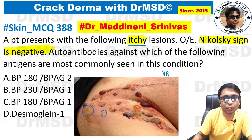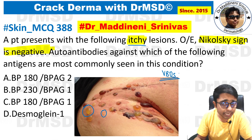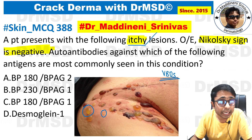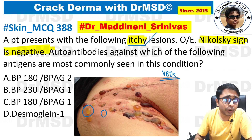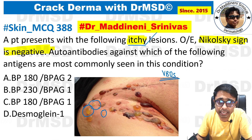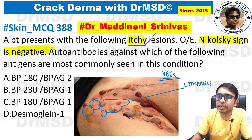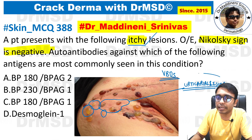This is basically a vesiculobullous disease. That is the first step in the diagnosis. And if you observe, there is one more clue: the lesions are itchy and you are able to see there is inflammation, there is erythema present at the base of these vesicles and bullae. These are urticarial lesions — urticarial lesions, that is wheals.